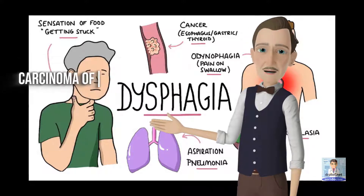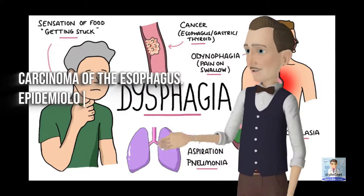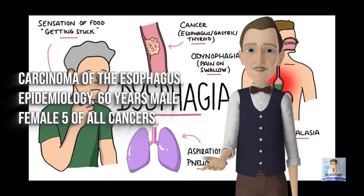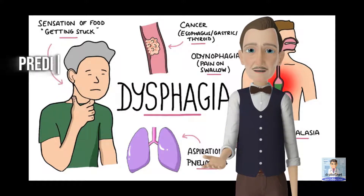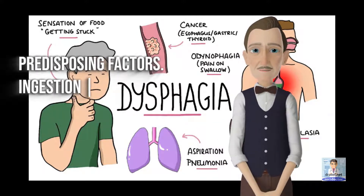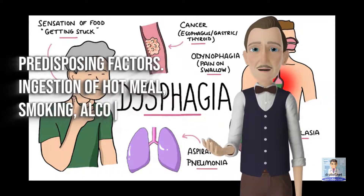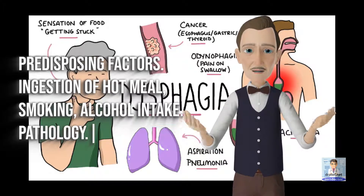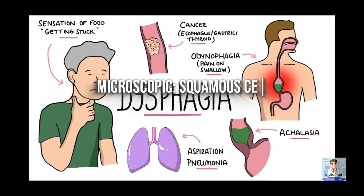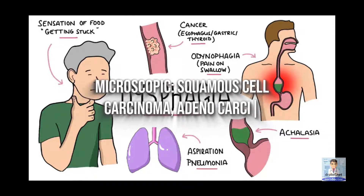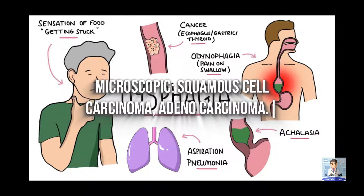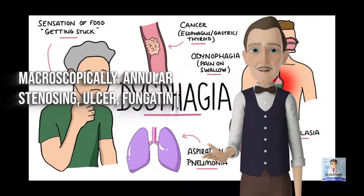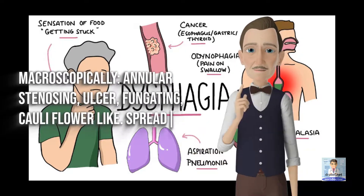Carcinoma of the esophagus. Epidemiology: typically presents at age 60 years, more common in males, representing 5% of all cancers. Predisposing factors include ingestion of hot meals, smoking, and alcohol intake. Pathology — microscopically: squamous cell carcinoma or adenocarcinoma. Macroscopically: annular stenosing, ulcerative, fungating, or cauliflower-like appearance.